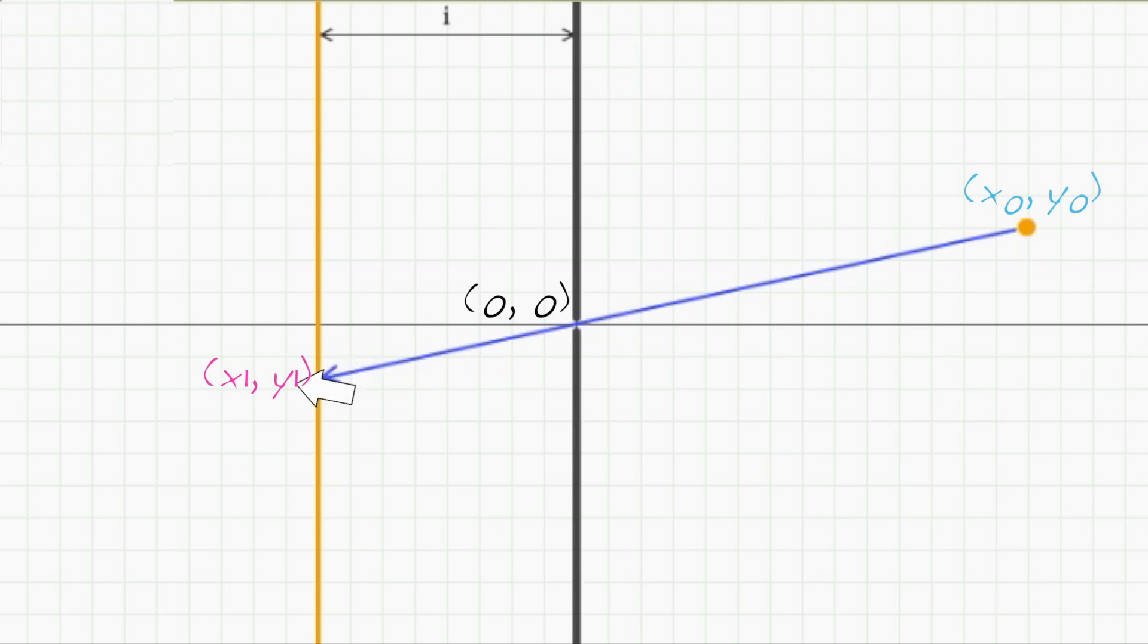So our first question is, what is X1 and Y1? One way to solve this is to use the slope-intercept form of a line. The slope of the ray is Y0 over X0, and the Y-intercept is 0 because we said this ray passes through the origin. That is, the equation of the ray is just Y equals Y0 over X0 times X plus 0.